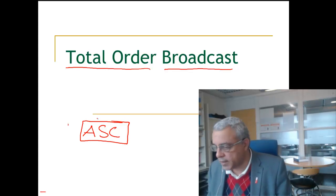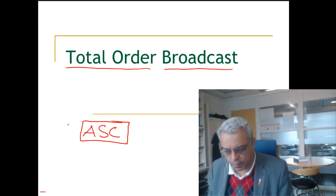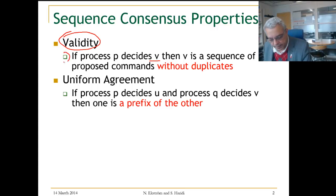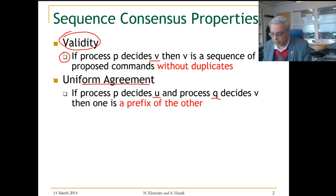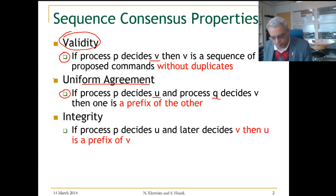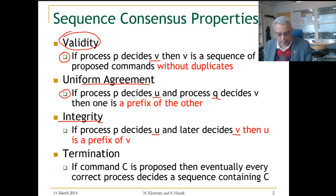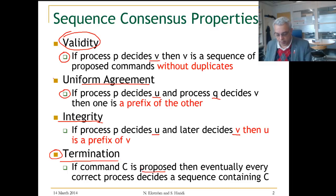The implementation will be based on sequence consensus, so let us remind ourselves of the properties of sequence consensus. We have validity, which says that a process decides on a sequence V, and V is a sequence of proposed commands without duplicates. Agreement, which is uniform, says if a process decides U and another decides V, then one is a prefix of the other — either U is a prefix of V or V is a prefix of U. We also have integrity, which says if a process P decides on U and later decides on V, then U is a prefix of V.